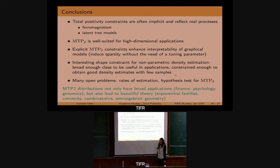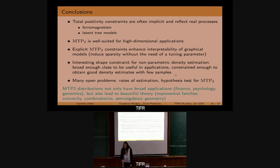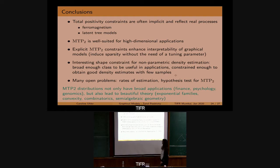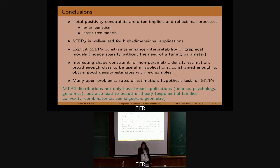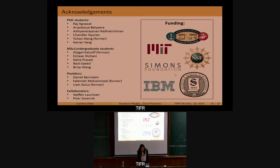There are many open problems in terms of rates of estimation and hypothesis tests for MTP2. We are applying it whenever we think it is appropriate, such as when you have a latent tree model. I think MTP2 has really nice broad applications and also a very beautiful theory in terms of exponential families, convexity, combinatorics, semi-algebraic geometry, etc.